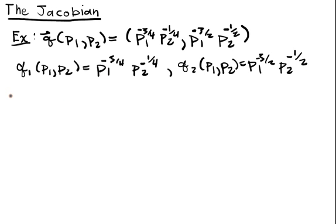We're going to look at the point P1 is equal to P2 is equal to one. At P1 equals P2 equals one, we want a linear approximation to both of these functions simultaneously.